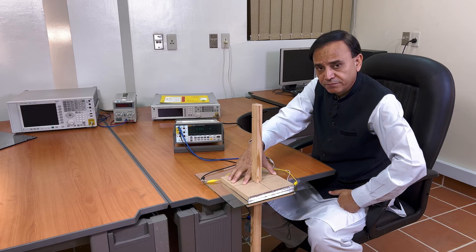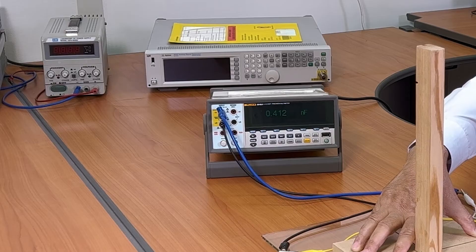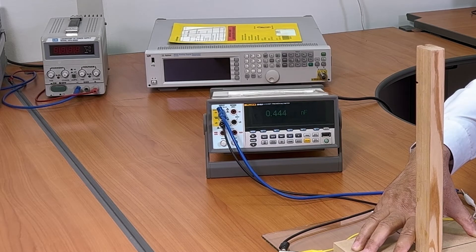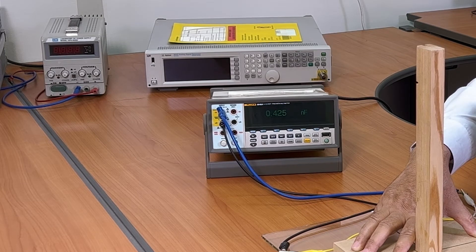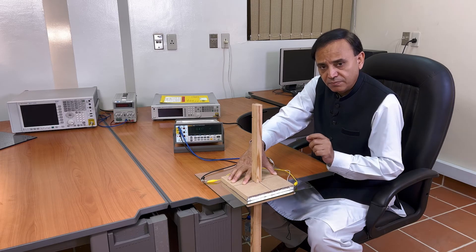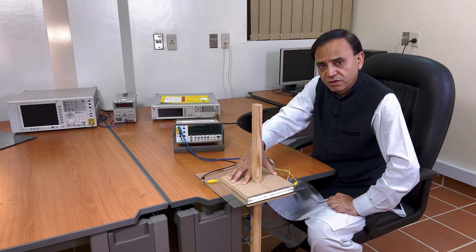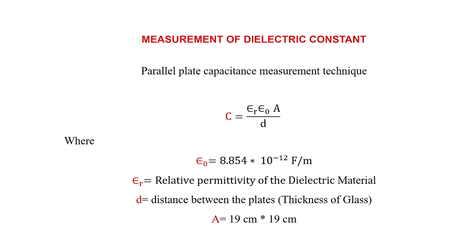There is a slight fluctuation in the value, which could be because we have to press the plates hard so that there is no air gap between them. Looking at the value, it is settling at about 0.42 nanofarad. After measuring this capacitance, we put the value of C into the formula — the other known values are the capacitance from the meter and the thickness of four millimeters — and from these we can calculate the dielectric constant of this material.